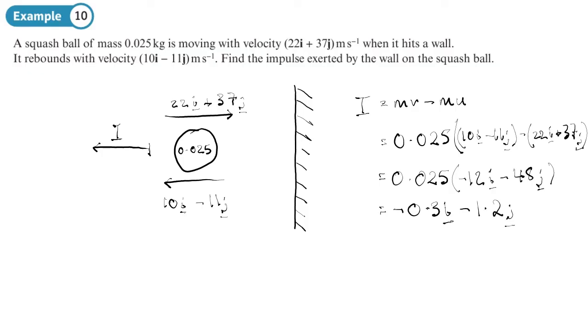And there we go, negative 0.3i minus 1.2j. If the question now asked for the magnitude of the impulse, you would do Pythagoras on it. And if it asks for the direction, you would do trigonometry on it. So that's a pretty straightforward one.